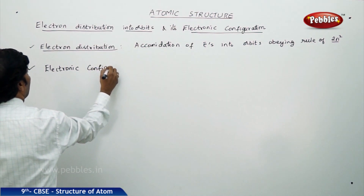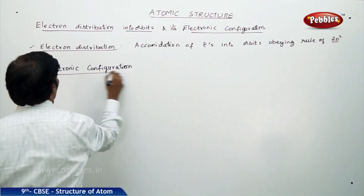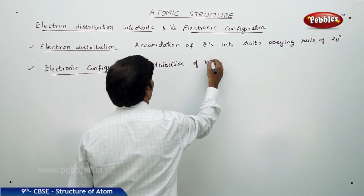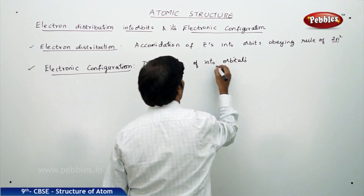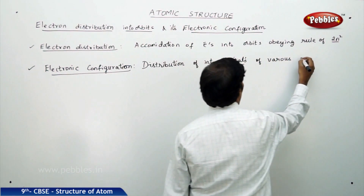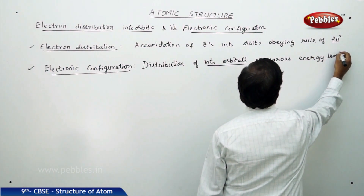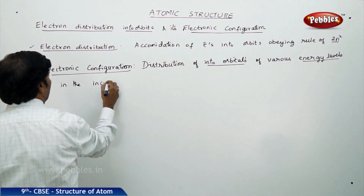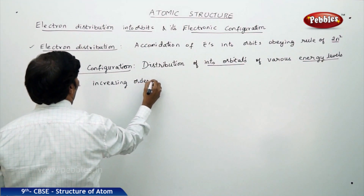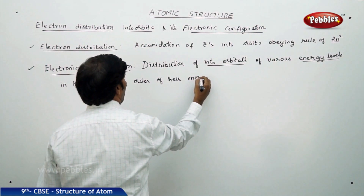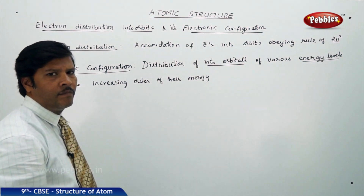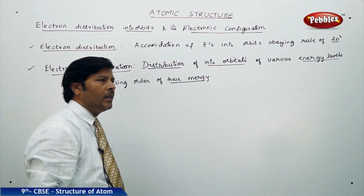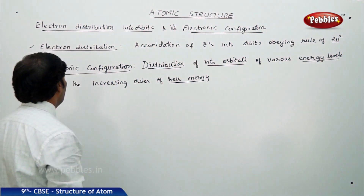What is electronic configuration? Electronic configuration is the distribution of electrons into orbitals of various energy levels in the increasing order of their energy.